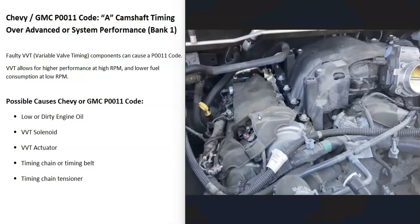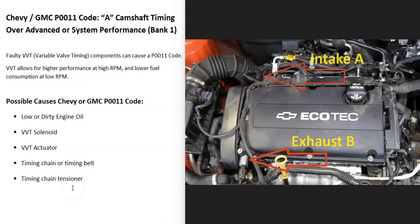Here's a Chevy 3.6 liter — you're going to have one right here, one right here, one over here, and one over here. The ones on the inside are going to be the intake and the ones on the outside are going to be the exhaust. When checking these out, be sure to check the wiring — any open, short, or bad connection is going to cause the same symptoms as a bad solenoid, so keep that in mind.